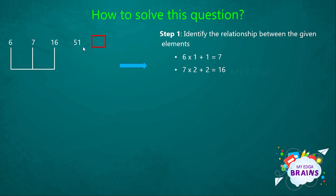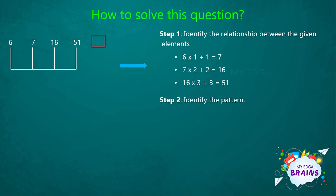Similarly, we can take the third and fourth elements, that is 16 and 51. Here, when we multiply 16 with 3, we'll get 48. But our fourth element is 51. So in order to get 51, we have to add plus 3 to it. That is, 16 × 3 = 48, plus 3 equals 51. From these relations, we get a pattern: ×1+1, ×2+2, ×3+3. It is clear that the relations are multiplying and adding the previous number with consecutive numbers starting from 1.